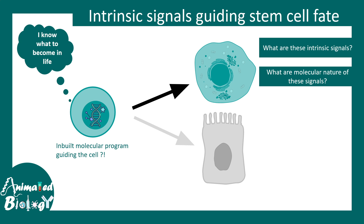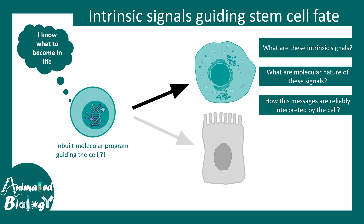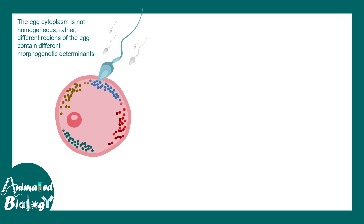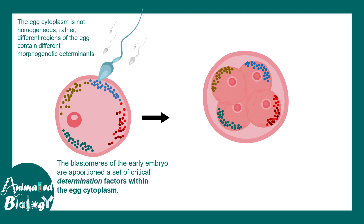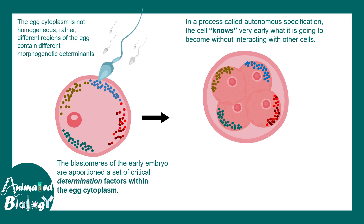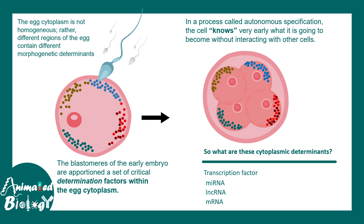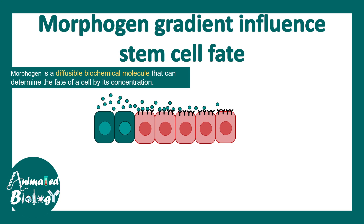In subsequent videos we would try to understand the exact mechanisms. The question is: what are these intrinsic signals, what is their molecular nature, and how are these messages reliably interpreted by stem cells? One hypothesis in developmental biology is that when the egg is fertilized by the sperm to create the zygote, there is a differential organization of competence factors distributed in a specific polarized fashion. When cells divide, each cell gets different determinants, and based on what determinant it received, it goes to a different cellular fate. These determinants could be transcription factors, microRNAs, mRNAs, long non-coding RNAs, and more.